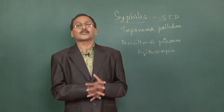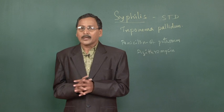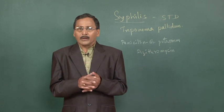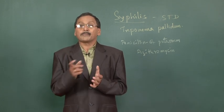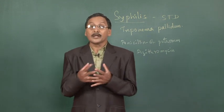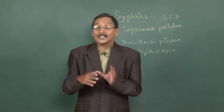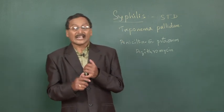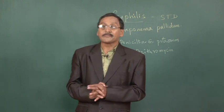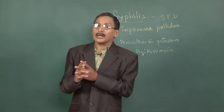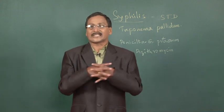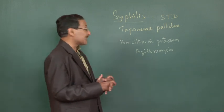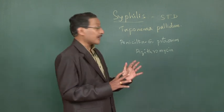Syphilis is another sexually transmitted disease which spreads through sexual contact or from mother to baby during pregnancy or birth, leading to congenital syphilis. The symptoms are ulcers on the nose, palate, hands, and limbs. In severe cases it may affect the nervous system, the heart, or blood vessels, and in some cases may even lead to death.